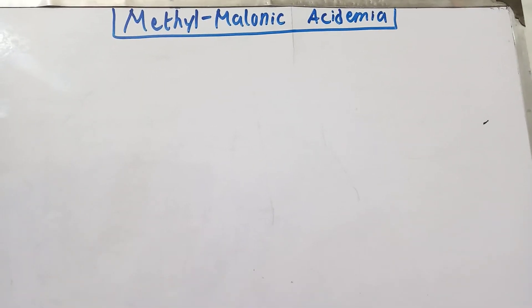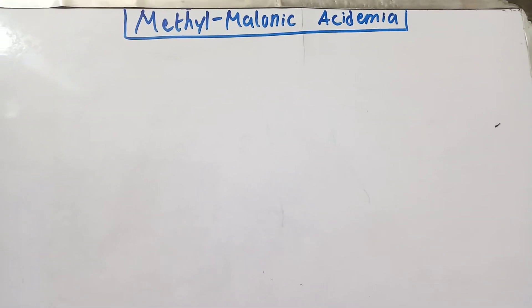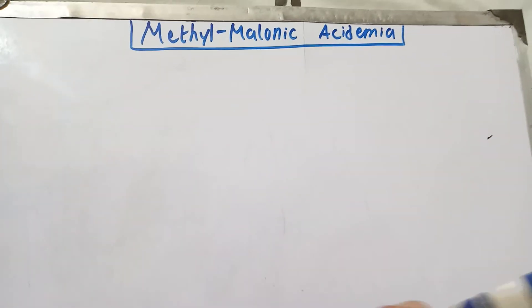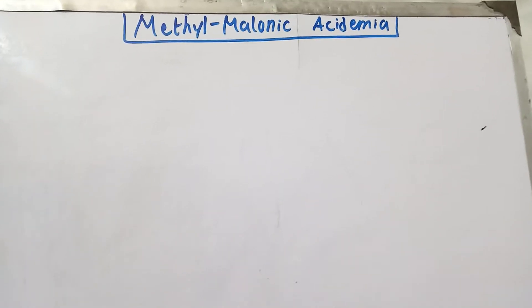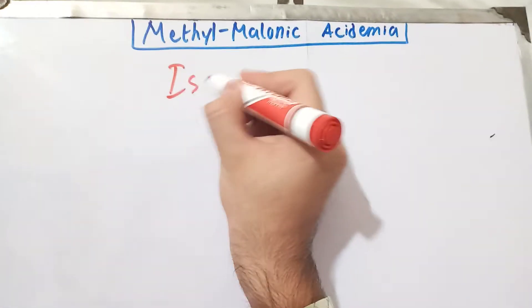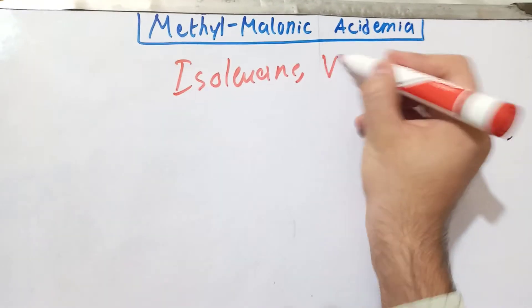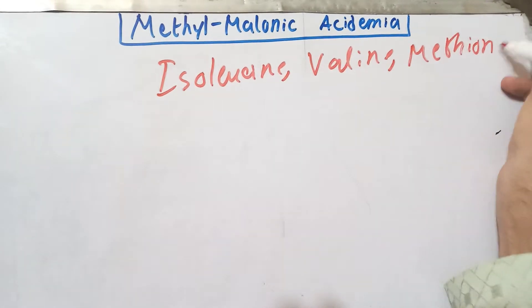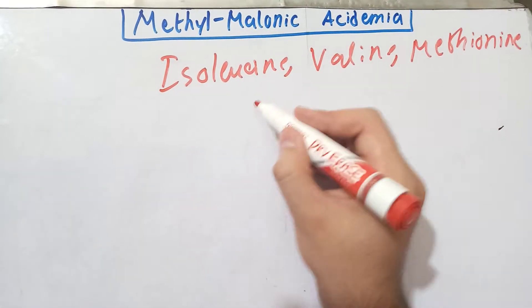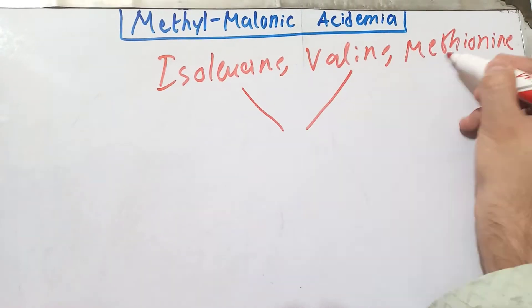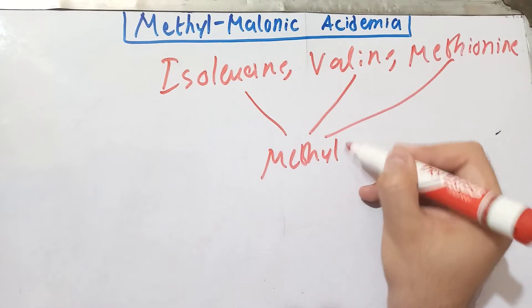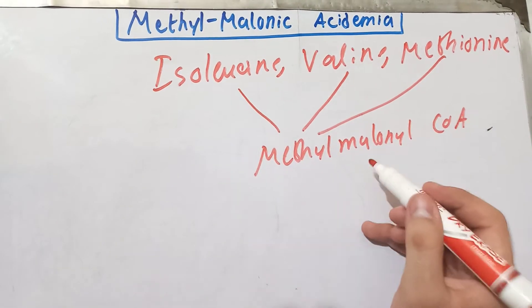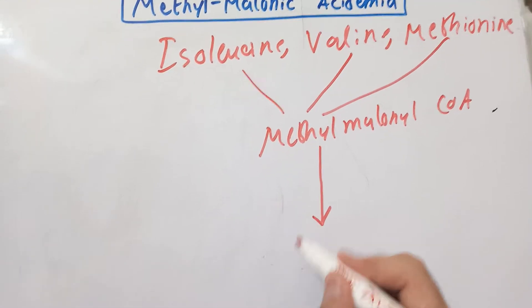Today we will talk about the disease called methylmalonic acidemia. As the name indicates, it involves the metabolism of mainly three amino acids: isoleucine, valine, and methionine. The metabolism of these amino acids and some others ultimately leads to the formation of a compound called methylmalonyl coenzyme A.